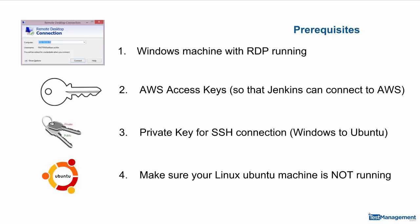Thirdly, the private key we created in that first module for our SSH connection — we'll need that too, as it needs to be configured within Jenkins. And fourthly, we need to make sure that our Linux Ubuntu machine is not running. If Jenkins sees this instance running, it will use it rather than creating a new instance. More on that in a minute too.